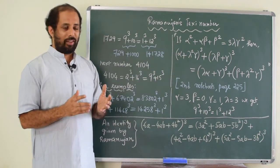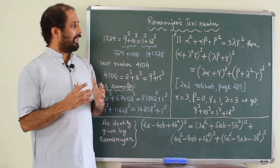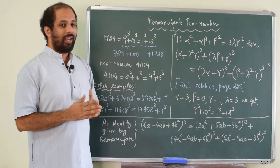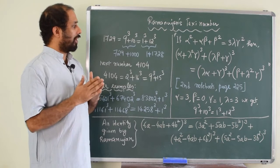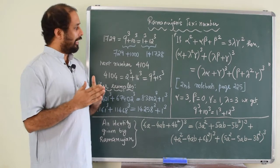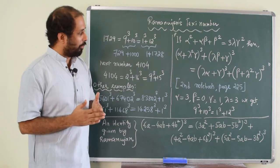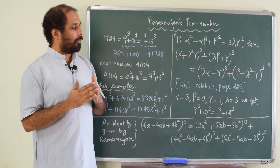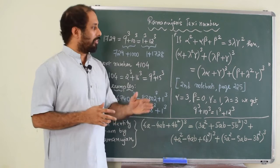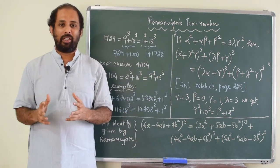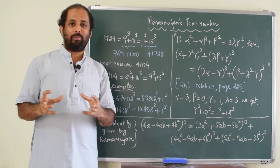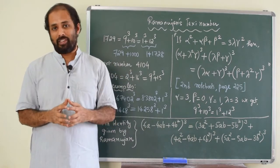If alpha square plus alpha beta plus beta square is equal to 3 delta gamma square, then alpha plus delta square gamma whole cube plus delta beta plus gamma whole cube plus delta alpha plus gamma whole cube plus beta plus delta square gamma whole cube. Now, if you substitute some values for alpha beta gamma and delta, you will get some numbers which can be written as sum of two cubes in two different ways.